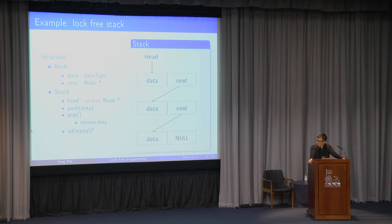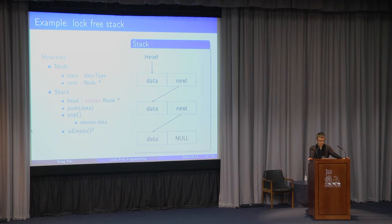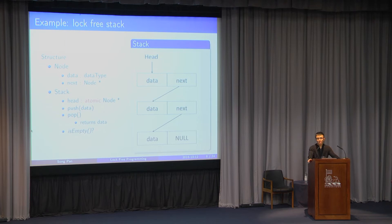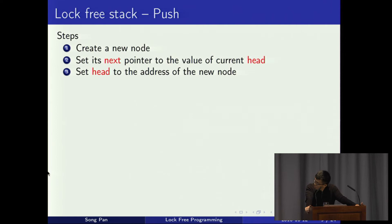Let's look at an example stack. Here we implement it with a linked list. A node has a data field and a 'next' pointer to the next node. The stack has a field called 'head' — the top of the stack — which is also a pointer to a node. We make it atomic so operations on it won't conflict. Note that some stacks provide an isEmpty method, but in lock-free programming there is no way to guarantee no other thread will change the stack between when isEmpty returns and when we actually evaluate it, so whatever value it returns will be meaningless. It doesn't make sense to have it here.